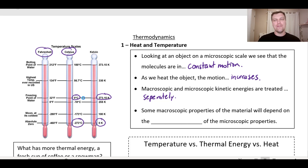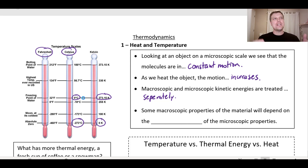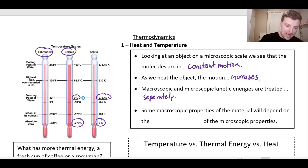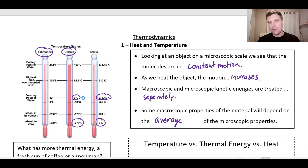We're going to think about macroscopic and microscopic energy separately. If you take a mug of coffee and throw it through the air, giving it a lot of kinetic energy, that doesn't necessarily speed up the motion of the particles on a microscopic scale. Some of the macroscopic properties we see in materials depend on the average of its microscopic properties. Particles are chaotic, moving in all directions — they don't all have the same kinetic energy, but on average, we can come to conclusions at a macroscopic scale.